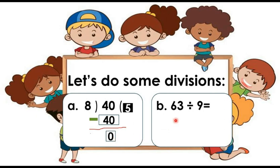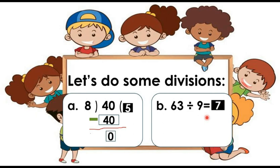Now let's see number B. Divide 63 with 9. So how many times does 9 go in 63? Yes, already we know 9 sevens are 63, so 9 goes 7 times in 63. So what is the quotient here? Yes, the quotient is 7. My dear students, you will practice more divisions at your home.